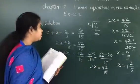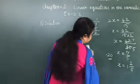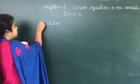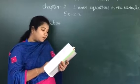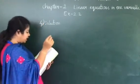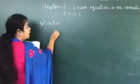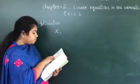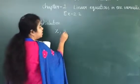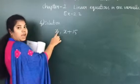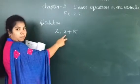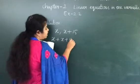Now we will go on to the fourth sum. Sum of two numbers is 95. If one exceeds the other by 15, find the numbers. I do not know what the numbers are, so let one number be x. Exceeds means addition, so you have to add 15. Therefore the other number is x plus 15. The sum of these two numbers is 95.